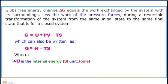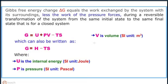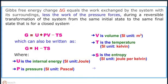Where U is the internal energy in joule, P is pressure in pascal, V is volume in meter cube, T is temperature in kelvin, S is entropy in joule per kelvin, and H is the enthalpy in joule.